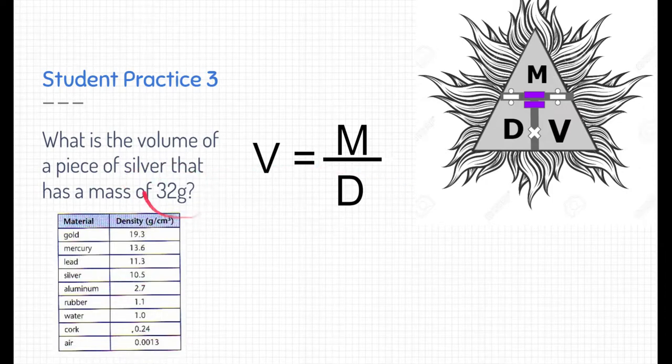So we know what the mass is. The mass is 32 grams. Now, how about the density? Well, this table is given here because, remember, density is an intensive property. That means it doesn't matter how much you have, density will always be the same. So we could look it up on a data table.